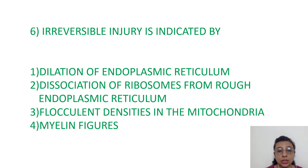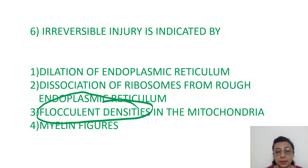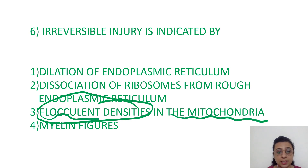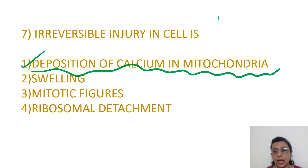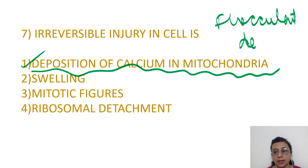For irreversible injury, you need to remember flocculent densities in the mitochondria due to calcium influx. Flocculent densities indicate irreversible injury — due to deposition of calcium in the mitochondria.